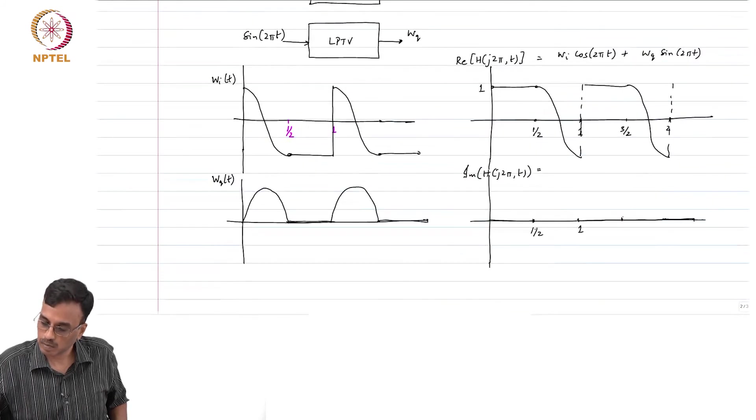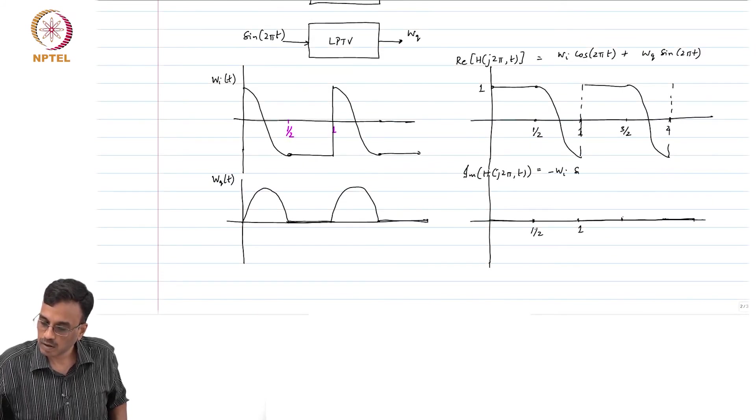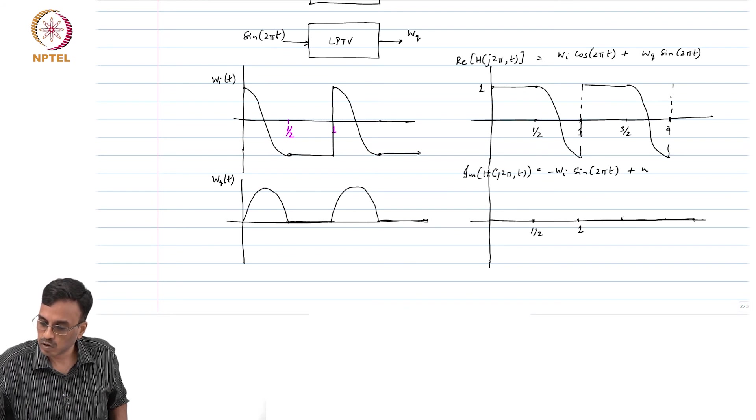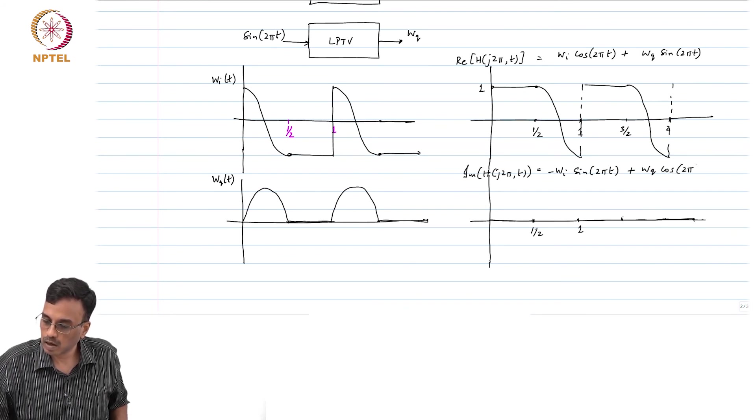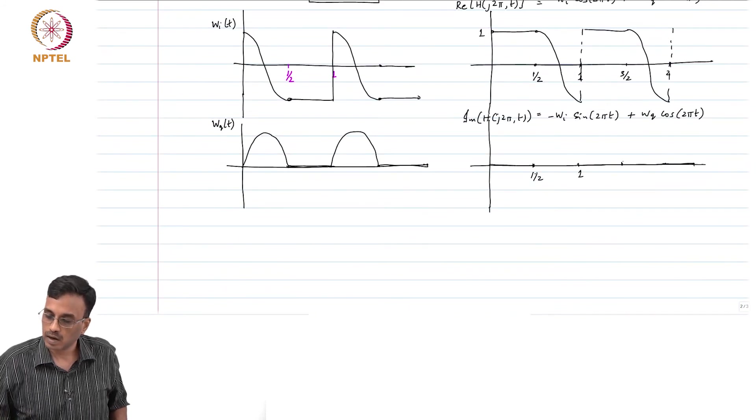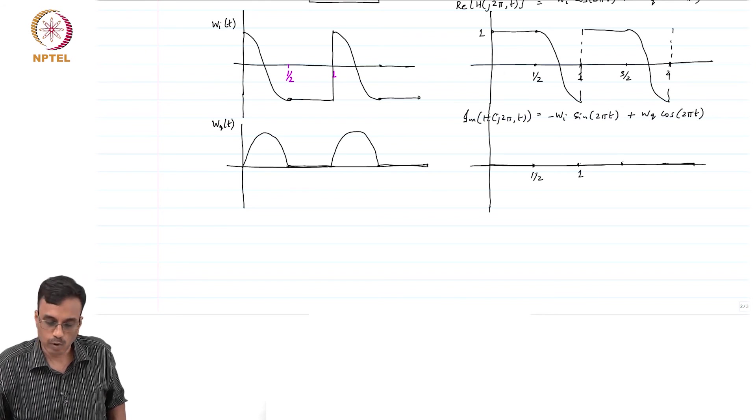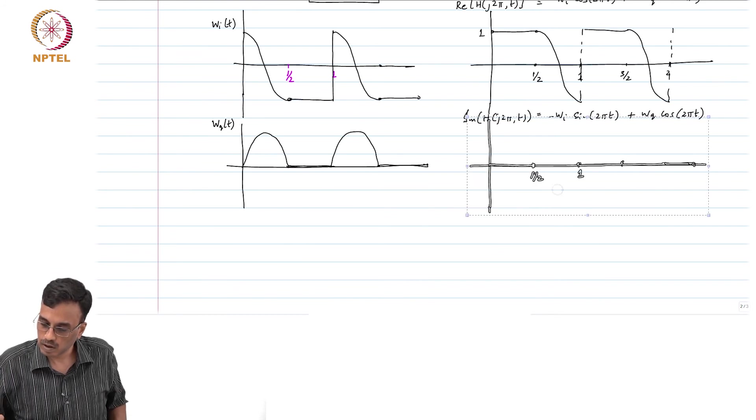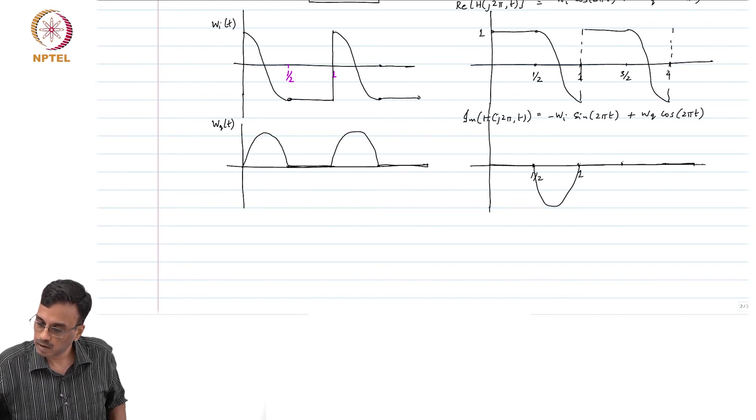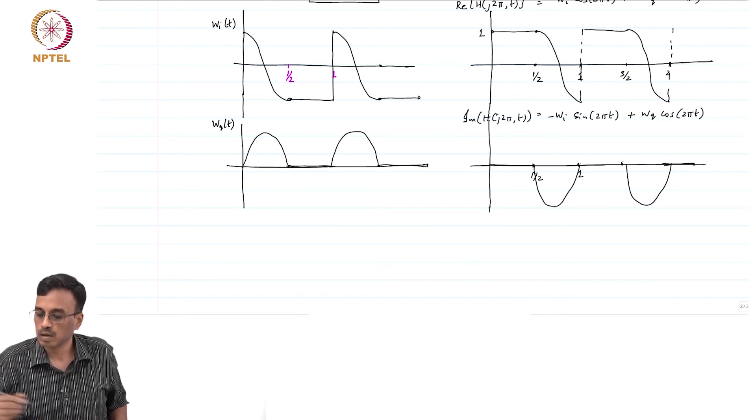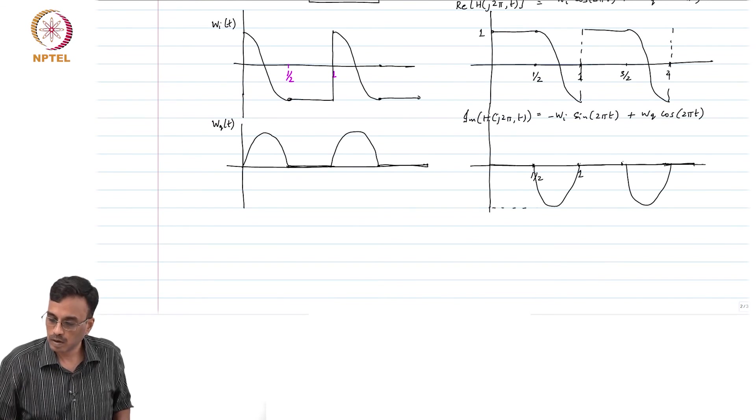It is basically minus wᵢ sin 2πt plus wq cos 2πt. Right, and of course wq is 0 in this part. wᵢ is minus 1, minus wᵢ is 1. So in this it should be negative, that is right, okay.